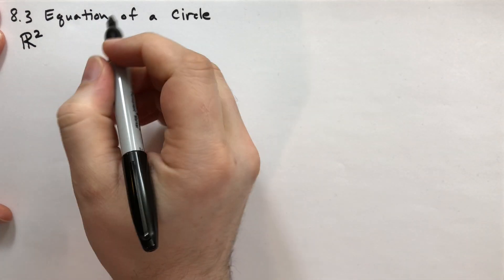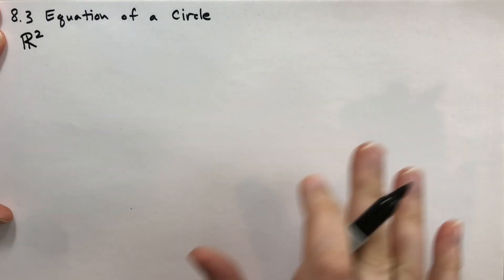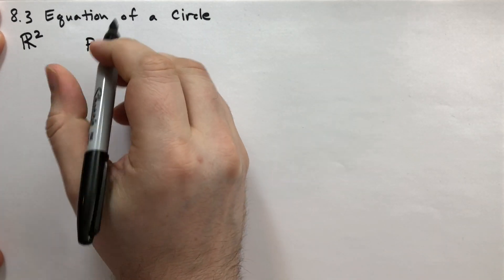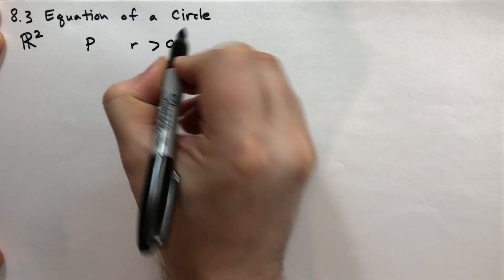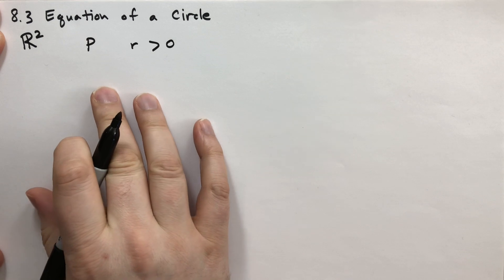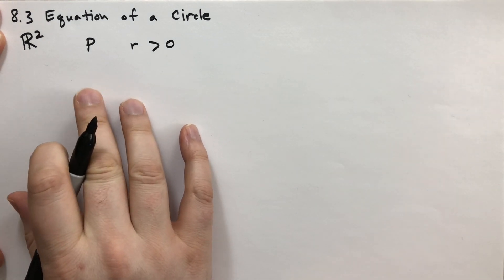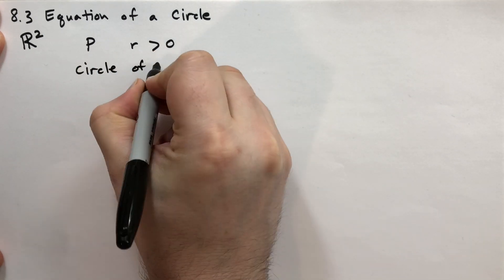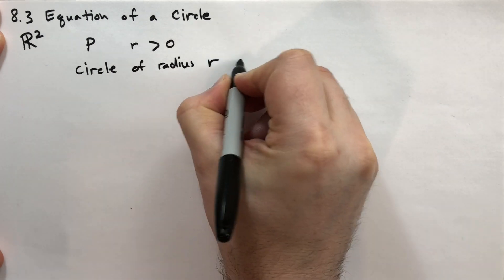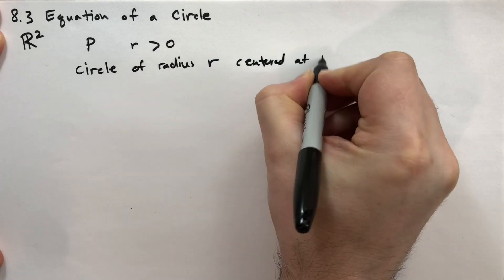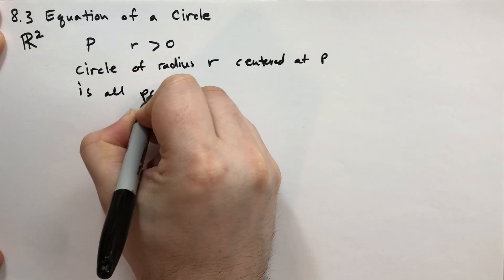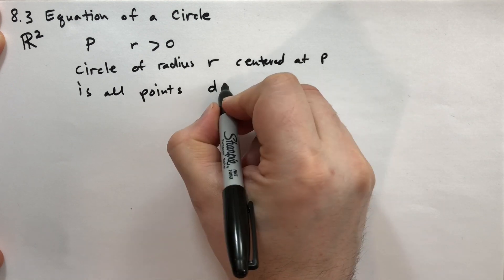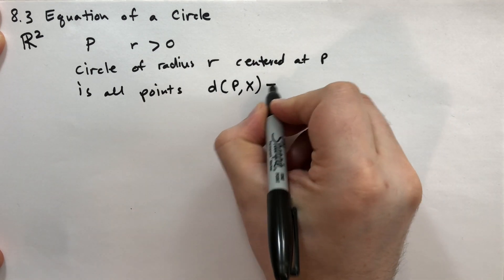A circle, as you remember from geometry, is defined as all the points that are a certain distance from the center. So let P be a given point and R be a number greater than zero. The circle of radius R centered at P, by definition, is the set of all points whose distance from P is equal to R — that is, all points x where the distance between x and the center equals R.